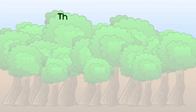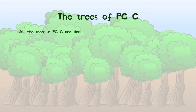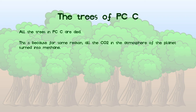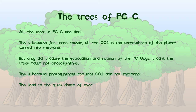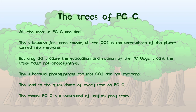This slide is about the trees of PCC. I am sorry to tell you that all the trees in PCC shriveled up and died. This is due to an unknown factor causing CO2 to turn into methane. This meant the PC guys left, but it also contributed to the death of the trees. This is due to the photosynthesis equation containing CO2 and not methane. This meant the trees had no food and they all died. PCC is now a wasteland of leafless, falling-apart trees. What a bad planet.